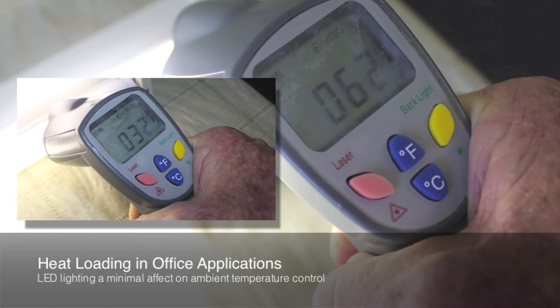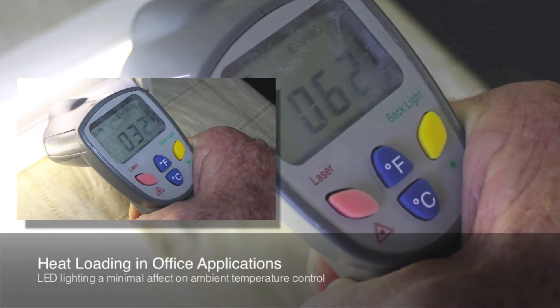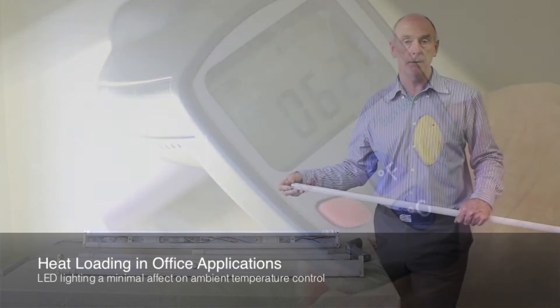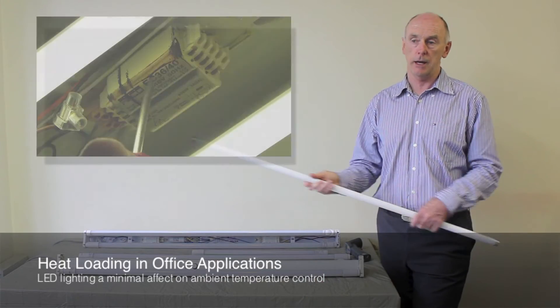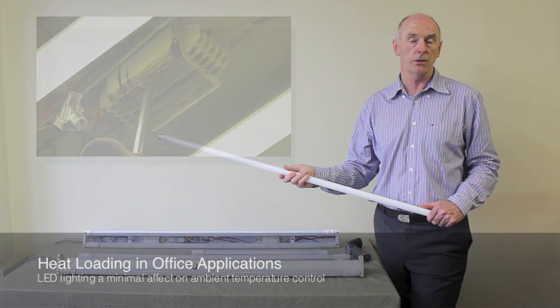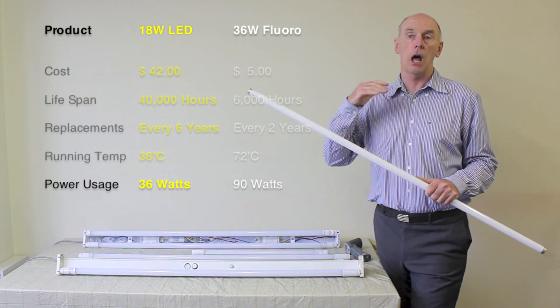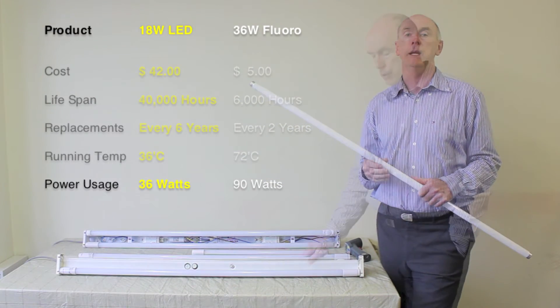With the LED driver, you've got a temperature rise maximum of around about 25 degrees above ambient. As against with a magnetic ballast, you've probably got a temperature rise of at least 80 degrees or 90 degrees above ambient. That is loading your air conditioning system in an office.